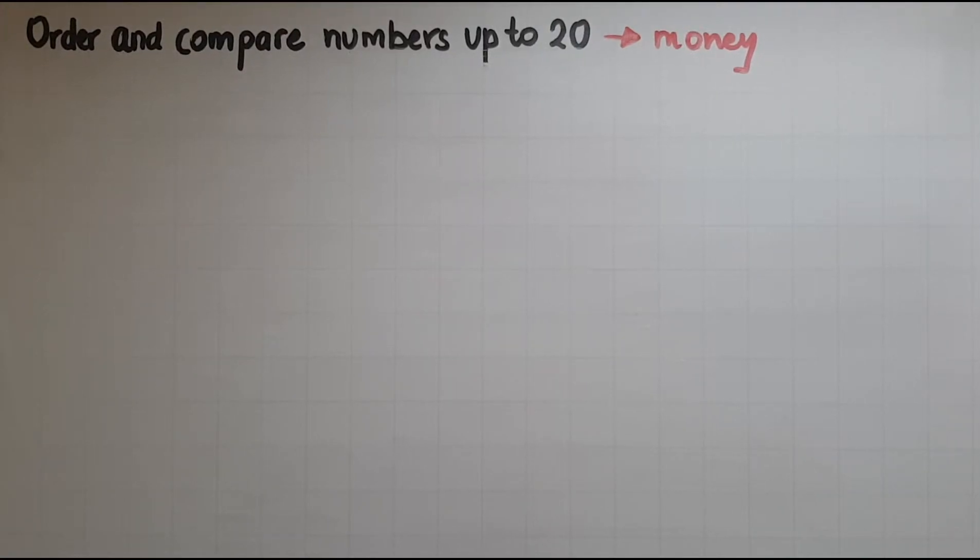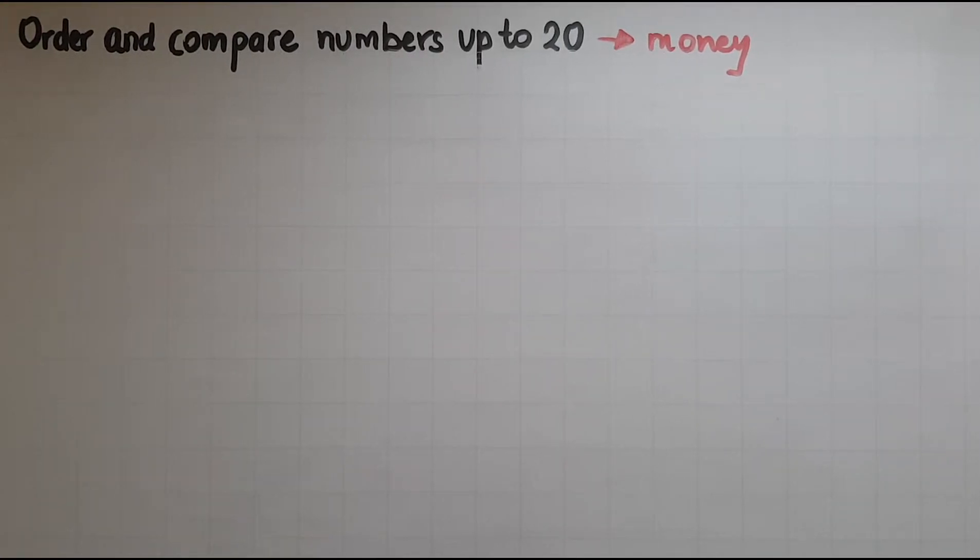In this video we'll learn how to order and compare numbers up to 20. A typical example of when we need to use this skill is money.